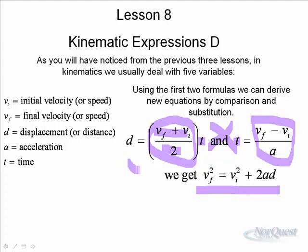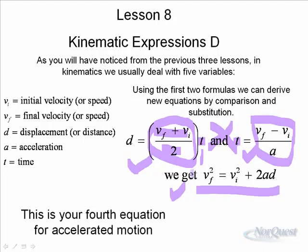we end up with vf squared is equal to vi squared plus 2ad. And remember, in this first equation we don't have any mention of acceleration. In the second equation, we don't have any mention of displacement. In this equation, notice there's no mention of time. Because when we substituted for time right here, we eliminated it from the equation. But it's a good equation to have. It's the fourth equation for accelerated motion. When you don't know the time, you can still figure out other components.